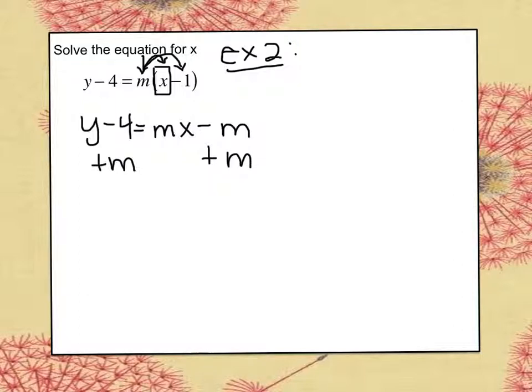Since m is not common to or is not like the y or the 4, you're just going to write them next to each other. So we'll have y minus 4 plus m equals mx, since these m's cancel to be 0.